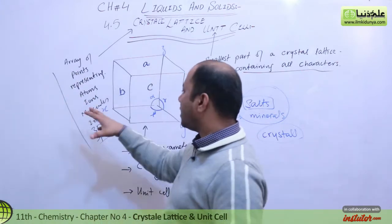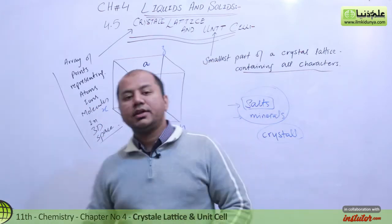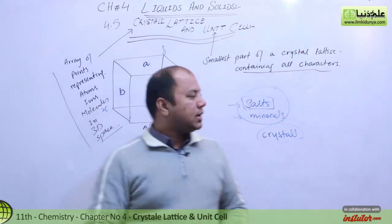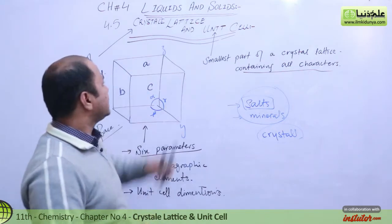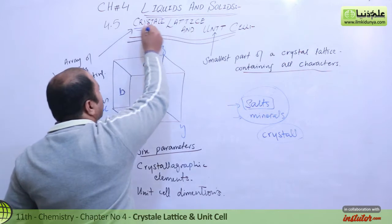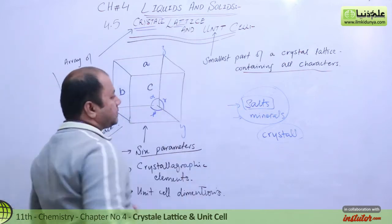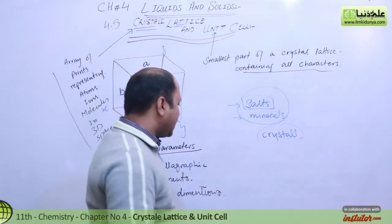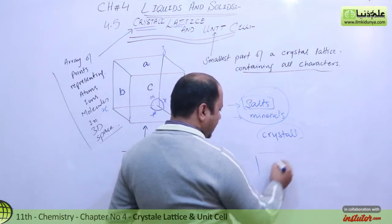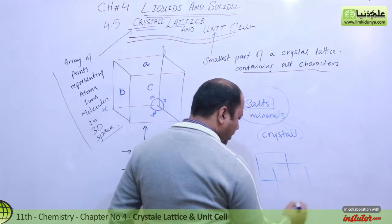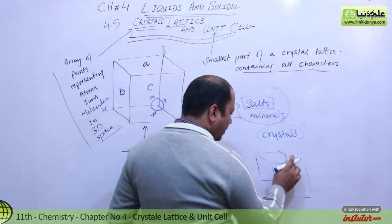A crystal is something like a 3D structure. It's something like an array of points representing atoms, ions, molecules in a three-dimensional space. Your definition of a crystal. You just need to remember this definition of a crystal lattice. It's a very important definition.